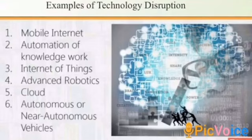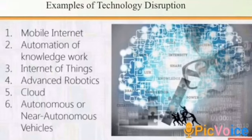An autonomous vehicle is one that operates without human involvement. An autonomous car, for example, is a vehicle capable of sensing its environment and operating without human involvement. A human passenger is not required to take control of the vehicle at any time.